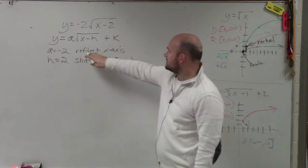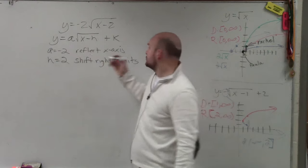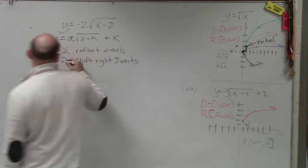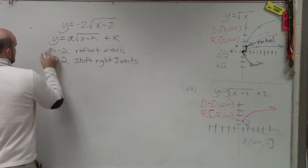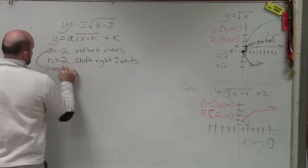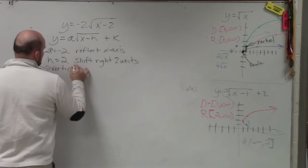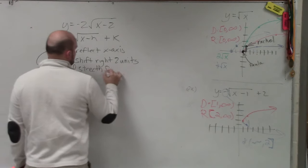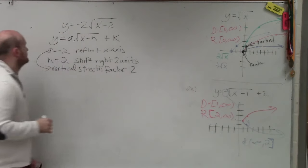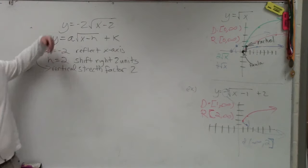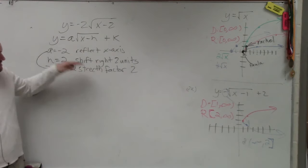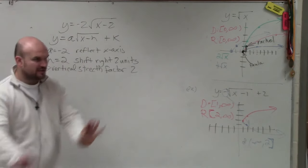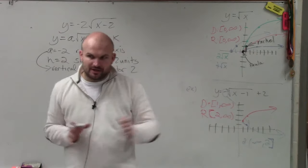And I'm sorry, this is a reflected x-axis, as well as 2 is going to be a vertical compression. I should have written that in there. I'm sorry, a vertical stretch. So a, if it's negative, reflects it about the x-axis. It also talks about its vertical stretch, which again, I will explain here in just a second.